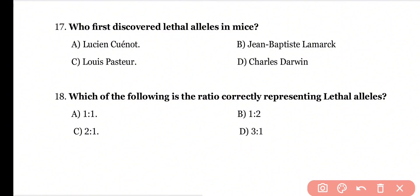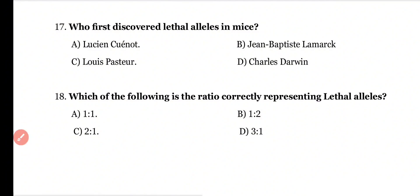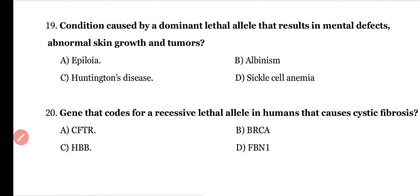Question 18: Which of the following ratios correctly represents the lethal allele? 1:1, 1:2, 2:1, or 3:1? Correct answer is option C. The 2:1 ratio is the exact ratio obtained in the case of a lethal allele.